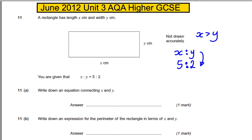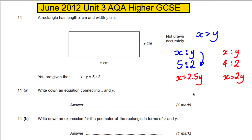In particular, X is two and a half times bigger than Y. For example, if X to Y was 4 to 2, then X would be twice the Y number. In this case it's not a simple 2 times — 5 to 2 means X must be 2.5 times Y. So our equation is X = 2.5Y. If Y is 2 then X is 5; if Y is 4 then X would be 10.